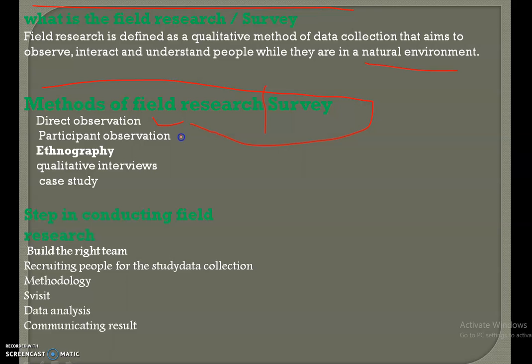Next is participant observation. In this method of field research, the researcher is deeply involved in the research process, not just purely as an observer but also as a participant. This method is also conducted in a natural environment, but the difference is the researcher gets involved in the discussion and can guide the direction of the discussion. The researcher lives with participants to make them comfortable and open up to deep discussion.